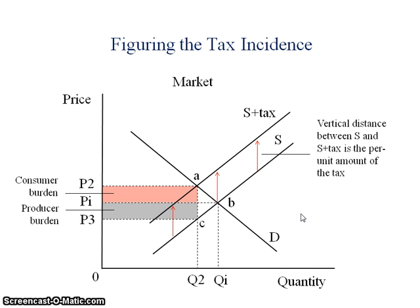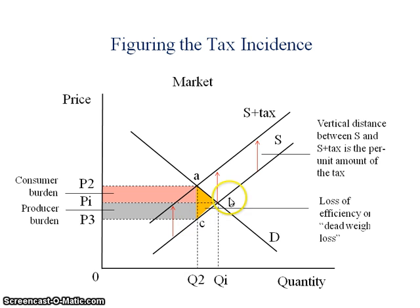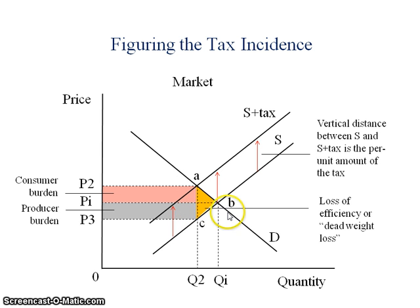We also have a triangular shaped area bounded by A, B, C. That's an efficiency loss because we've passed this particular tax. Society has lost some amount of consumer surplus and some amount of producer surplus. When we combine that total, we call that either a total loss of efficiency or deadweight loss to society.